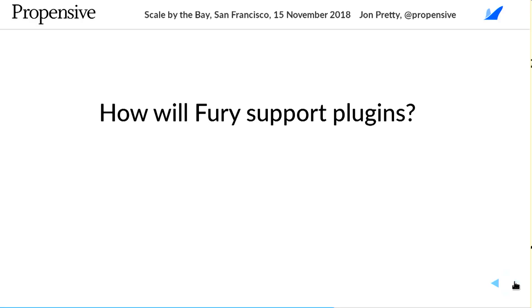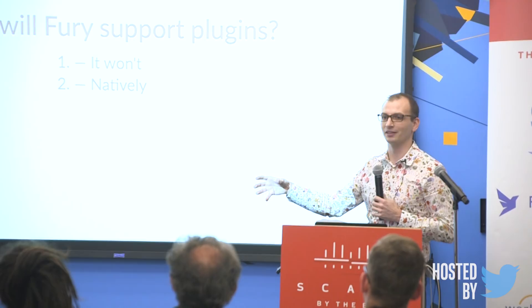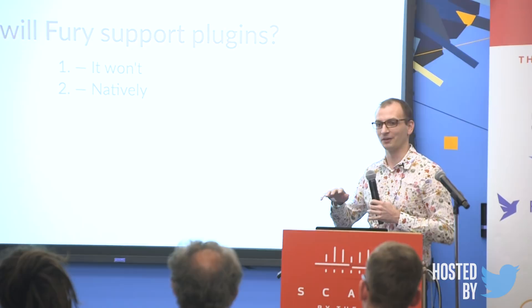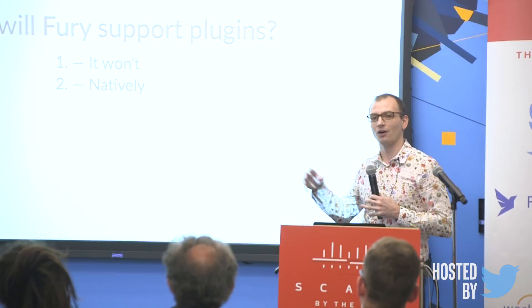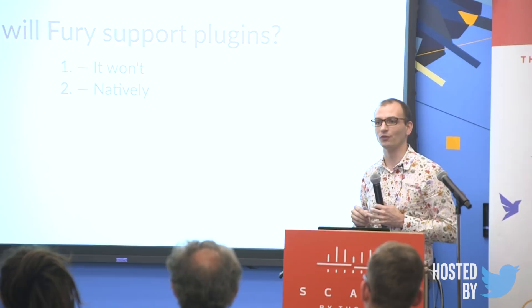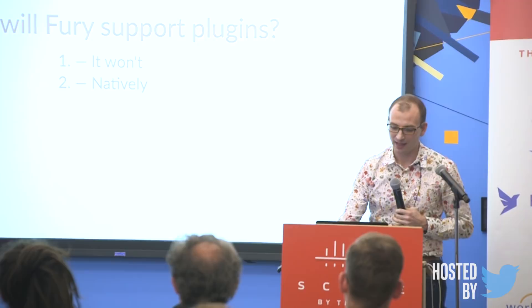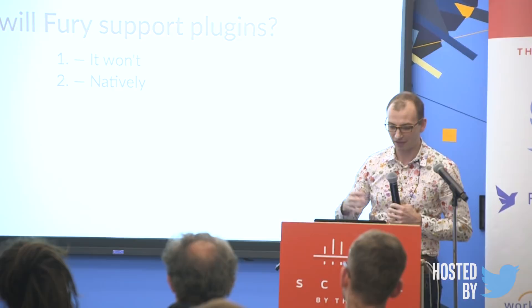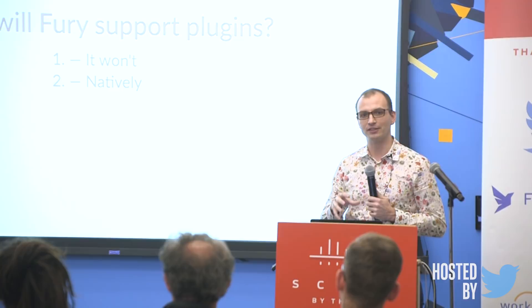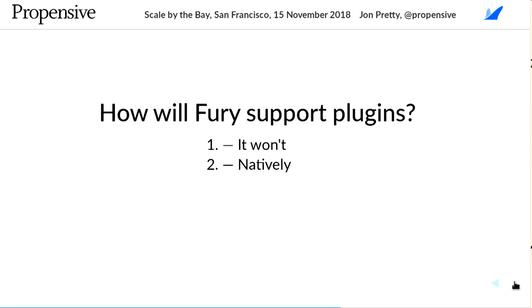I've got three answers to how Fury handles plugin-like functionality. First: it won't. Second: natively — a lot of features could be brought into Fury as native features. Things like code coverage could become part of Fury itself, taking the monolithic Linux kernel approach rather than the microkernel approach. That requires some sort of rapid release cycle, but it gives full integration and a better user experience. Third: as libraries.